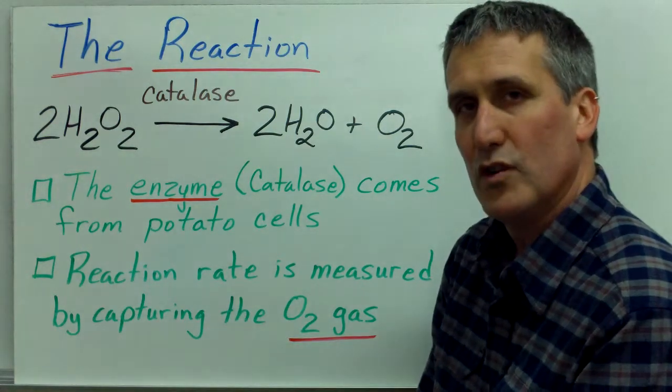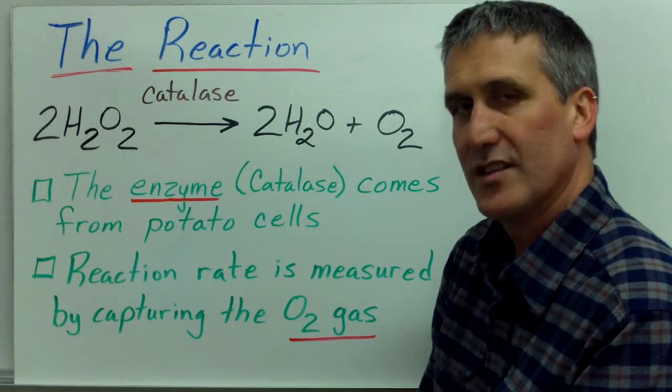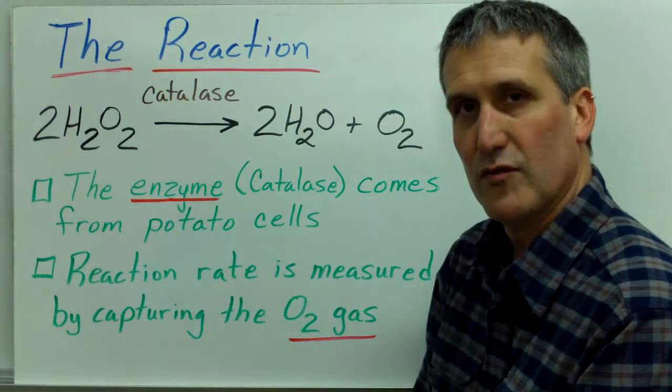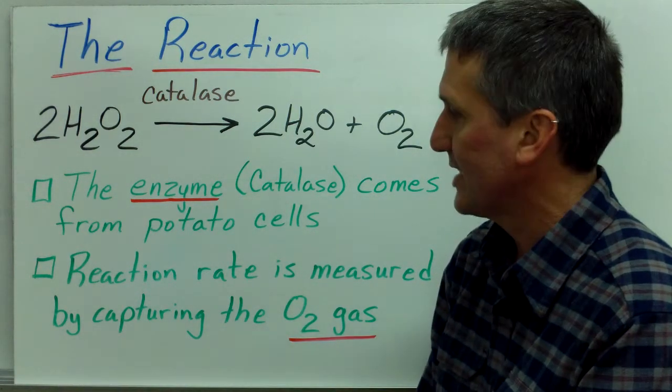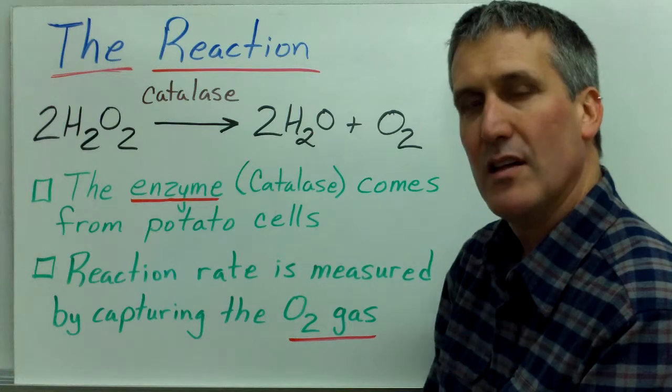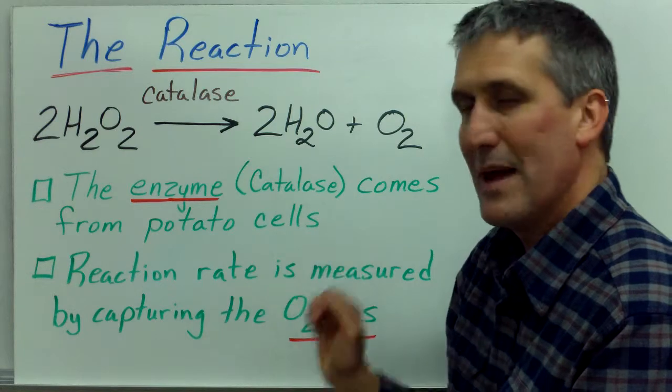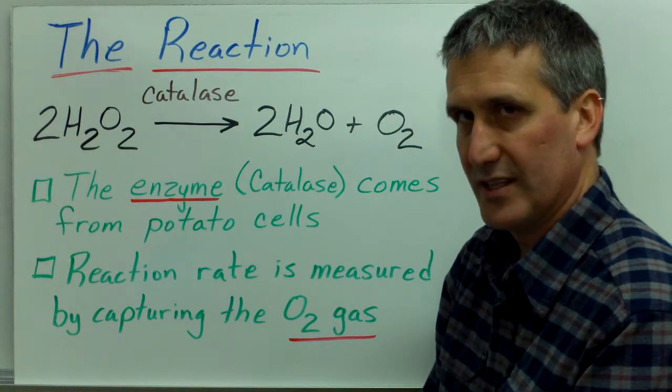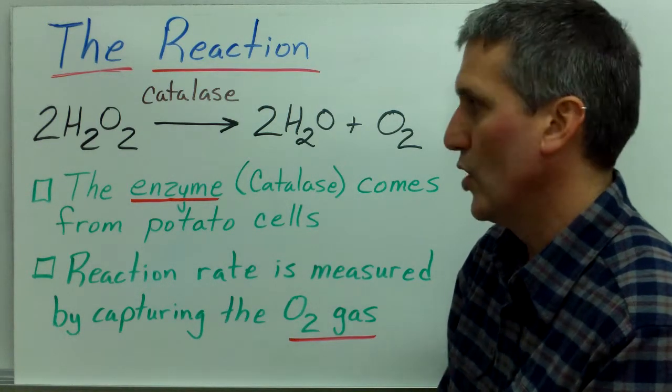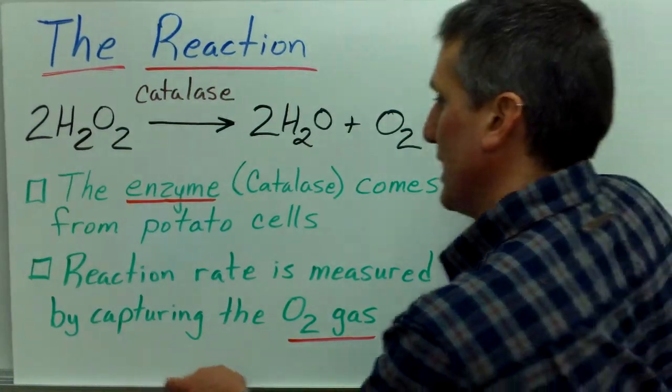What we want to do is we want to see if there's a change in the reaction rate when we talk about those four factors that affect enzyme action. How are we going to tell if the reaction rate is sped up or slowed down? We're going to look at the amount of O2 that is being released. So, we're going to measure the amount of O2 being released.